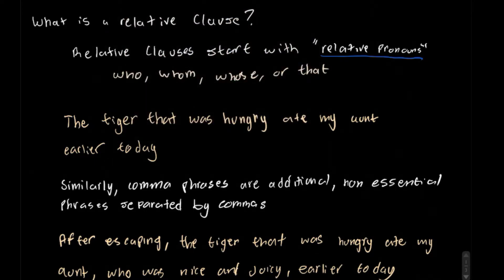So, here's an example of a sentence. As you can see, the tiger that was hungry ate my aunt earlier today. So, if we read this again, the tiger that was hungry ate my aunt earlier today. Now, if we just cross this out, we have a sentence remaining. The tiger ate my aunt earlier today.